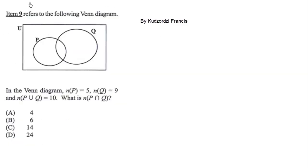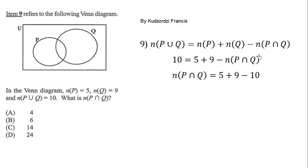This is question 9. In the Venn diagram, the cardinality of P is 5, cardinality of Q is 9, and cardinality of P union Q is 10. This is an intersecting set. We use De Morgan's law. Substitute the values: 10 equals 5 plus 9 minus the intersection. Swap this to the other side: the intersection equals 5 plus 9 minus 10. Simplify: 5 plus 9 is 14 minus 10 equals 4. Therefore the correct answer is A.